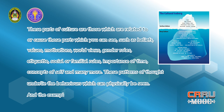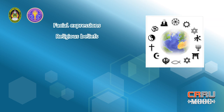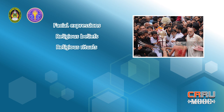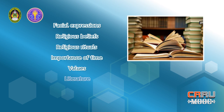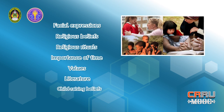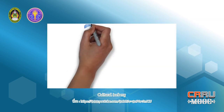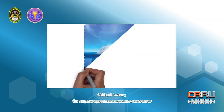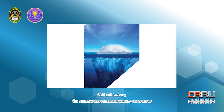Examples of the deeper features of culture include facial expressions, religious beliefs, religious rituals, importance of time, values, literature, and child-raising beliefs. In his book Beyond Culture, Edward T. Hall developed the iceberg analogy of culture.